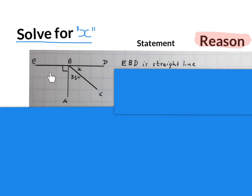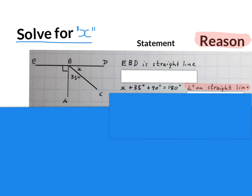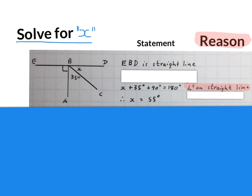Here is our first problem. They said solve for X. When we answer questions in geometry we always have to make statements, say something and then give a reason why we say that. We got this sketch and they said EBD is a straight line. One possible way of answering it is to write X plus 35 plus 90 equals 180, reason: angles on a straight line. Using equations, minus the 35 and 90 from 180, and we get X equals 55 degrees.